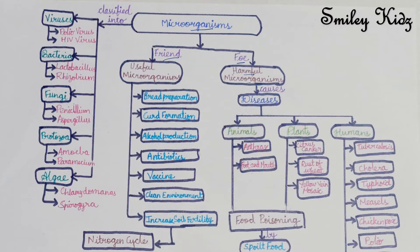Let's first see how these microorganisms are useful to us. They help in bread preparation, curd formation, alcohol production, in antibiotics, in vaccines. They also help in cleaning the environment and also they help in increasing the soil fertility. We have so many uses of microorganisms around us.